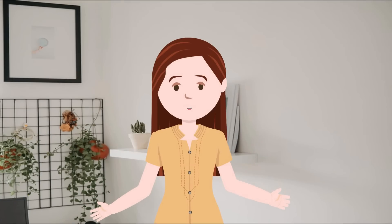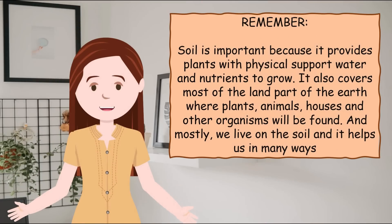And now kids, are you now familiar with the different types of soil and their characteristics? And even the different layers and their characteristics? Always remember, soil is important because it provides plants with physical support, water, and nutrients to grow. It also covers most of the land parts of the earth where plants, animals, houses, and other organisms are found. And mostly, we live on the soil and it helps us in many ways.